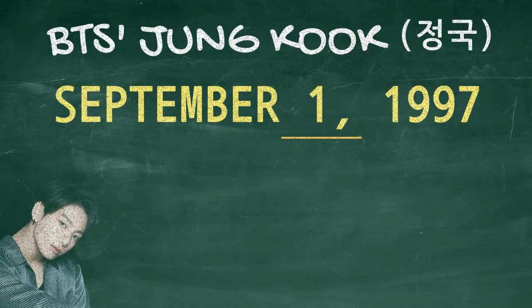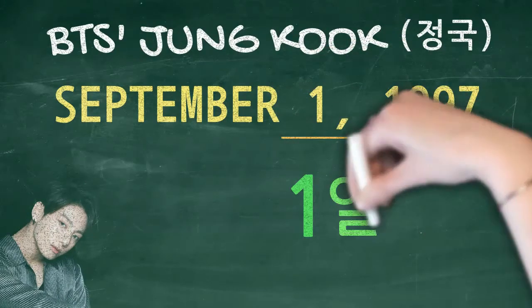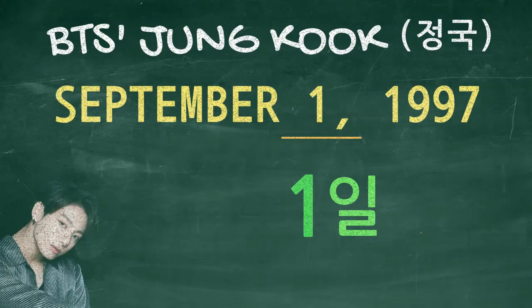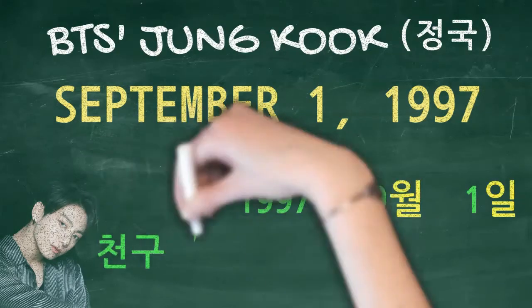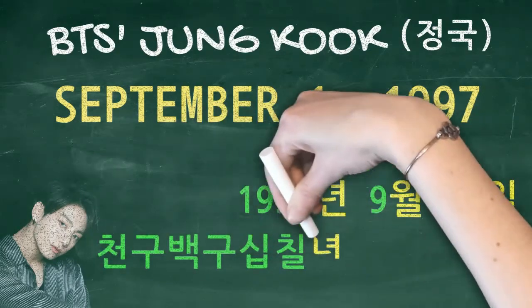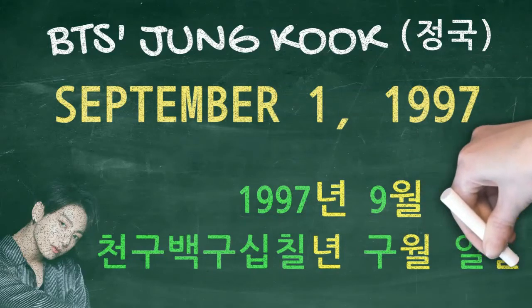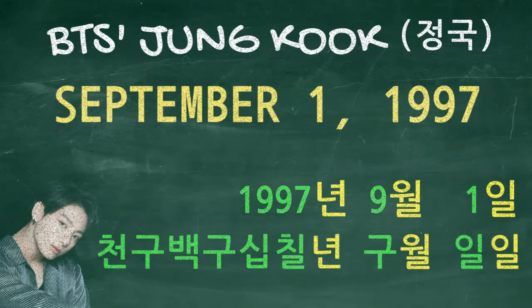Lastly, the date would be one plus 일 (il). So Jungkook's birthday is 천구백구십칠년 구월 일일 (cheon-gu-baek-gu-sip-chil-nyeon gu-wol i-ril). In Korean, you could say: 방탄소년단 정국의 생일은 천구백구십칠년 구월 일일입니다.